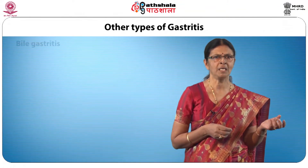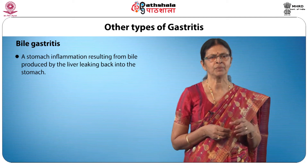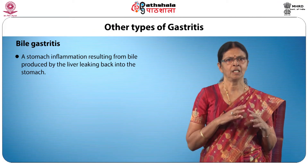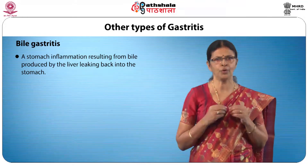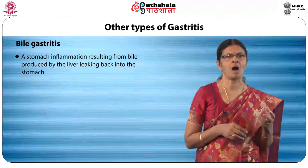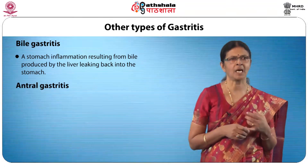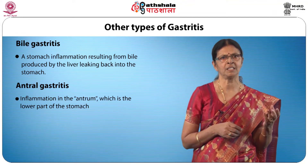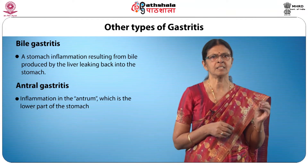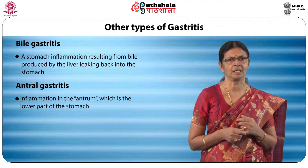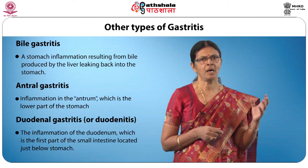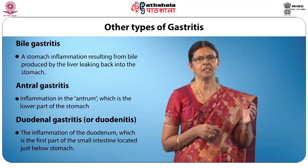Next is bile gastritis — a stomach inflammation resulting from bile produced by the liver leaking back into the stomach. If not treated properly, the acidic fluids will keep eroding the stomach lining over time and can even reach the esophagus and cause heartburn. Next is antral gastritis, which is inflammation taking place in the antrum at the lower part of the stomach — the part that releases the stomach contents into the intestines. Then there is duodenal gastritis, which is inflammation of the duodenum, the part of the small intestine located just below the stomach.